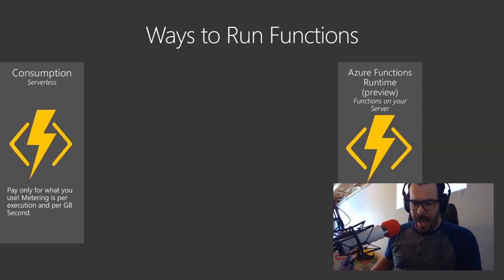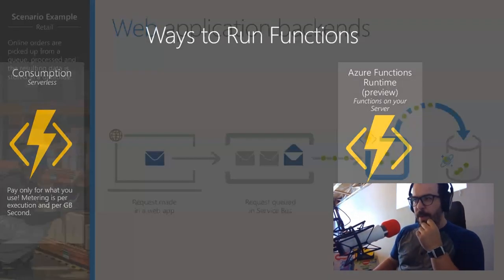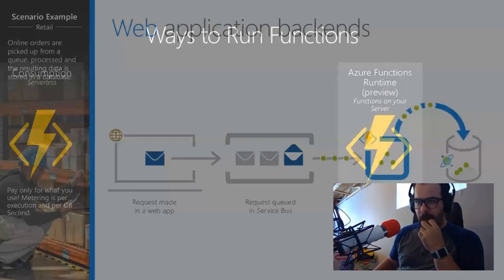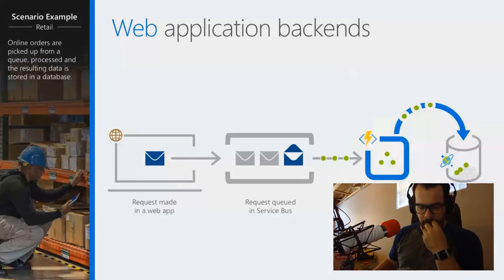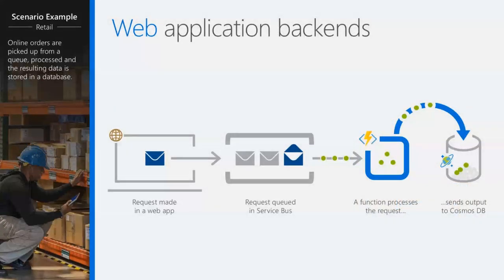Let me go through a few different scenarios that are possible with Azure Functions. There are application backends: you make a request, things are queued on a bus, the function depiles them and sends the output to storage.